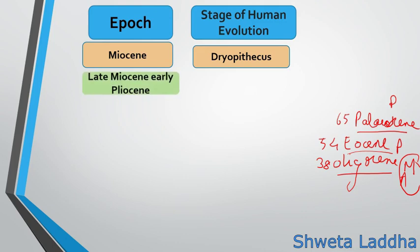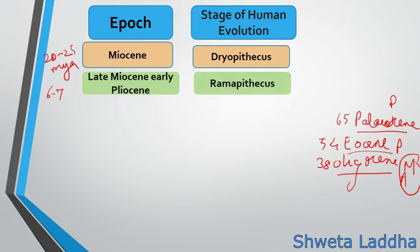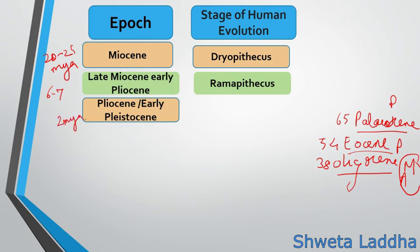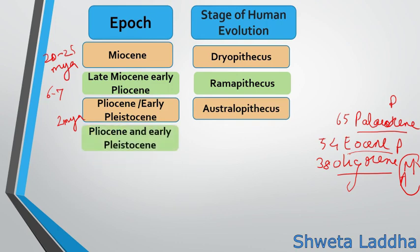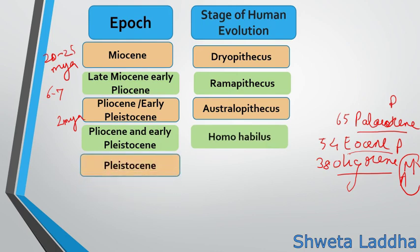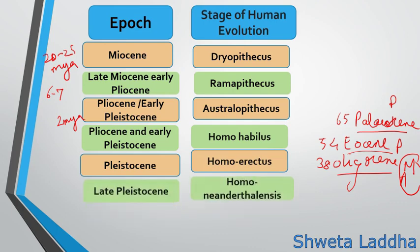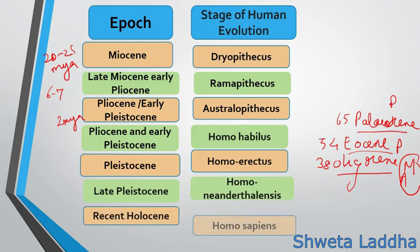During the Pliocene and early Pleistocene — Pleistocene being around 2 million years ago — fossils of Australopithecus were found. Homo habilis was also found during the same period. In the Pleistocene epoch, 2 million years ago, Homo erectus were present. In the late Pleistocene, Homo neanderthalensis appeared, whereas in the recent Holocene epoch, Homo sapiens are present.